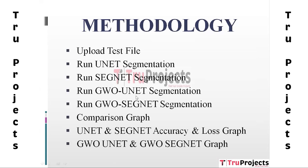The fourth module is Run GWO-UNet Segmentation. This module involves running the GWO-UNet model on the uploaded chest X-ray. GWO-UNet refers to combining the UNet architecture with the Grey Wolf Optimization algorithm. GWO is a nature-inspired optimization algorithm that imitates the hunting behavior of grey wolves, used here to fine-tune the UNet model's parameters and improve its segmentation performance.